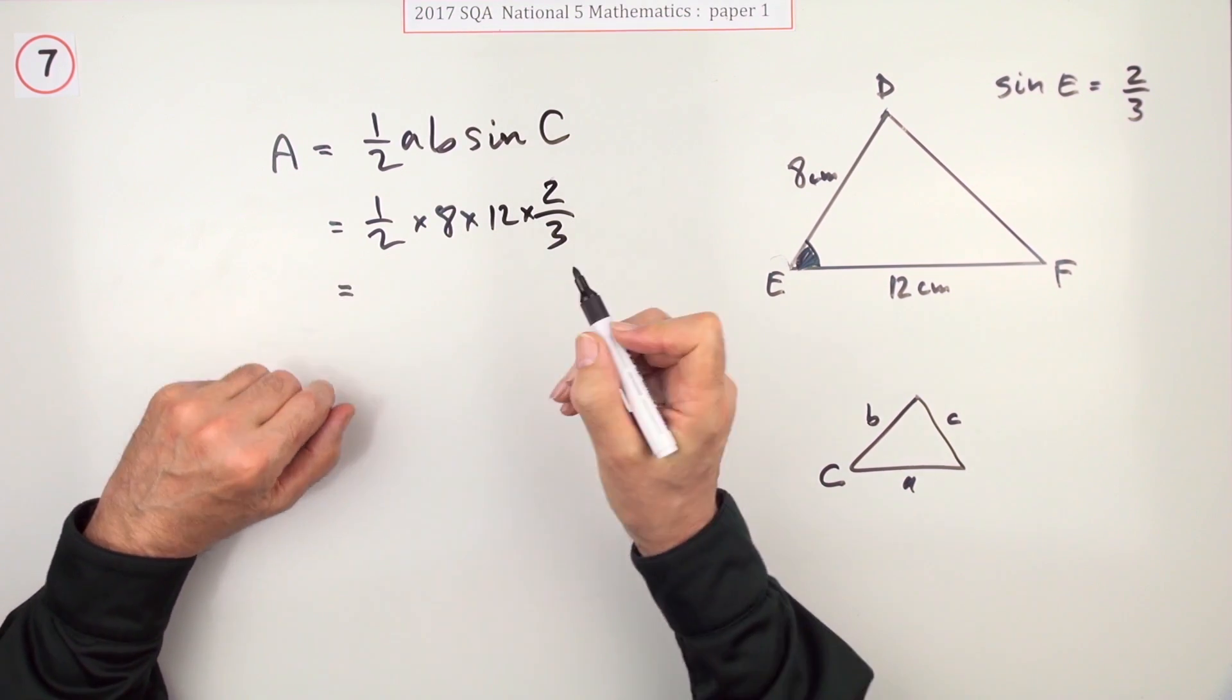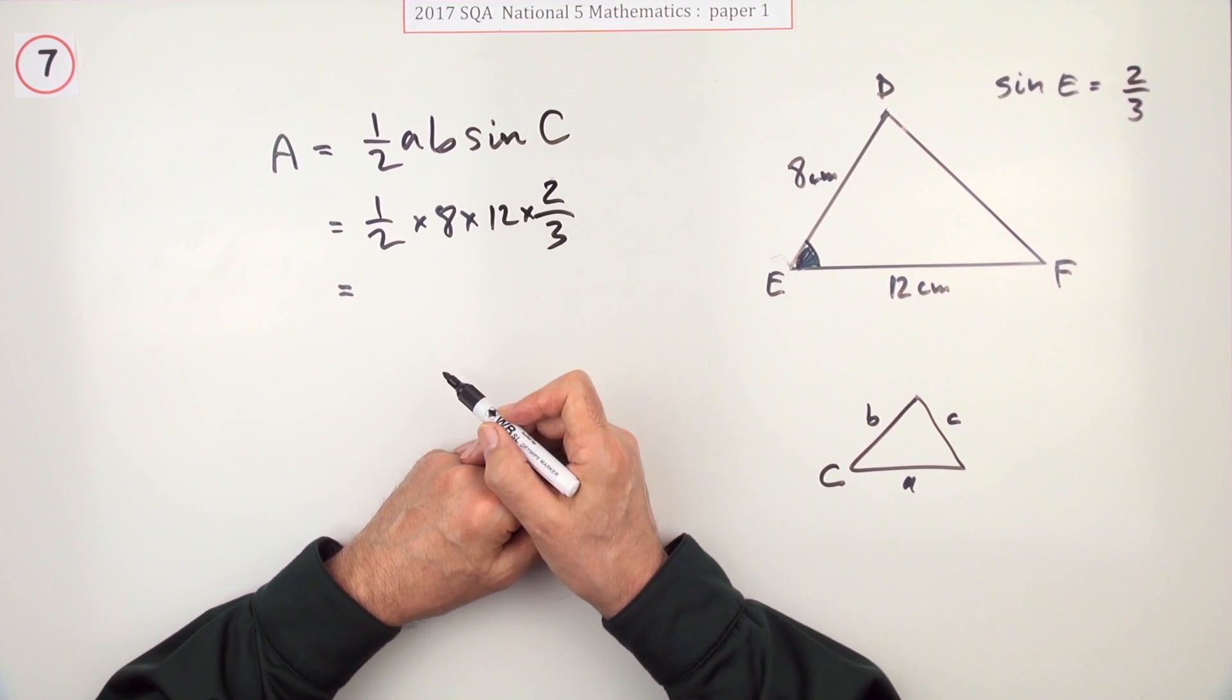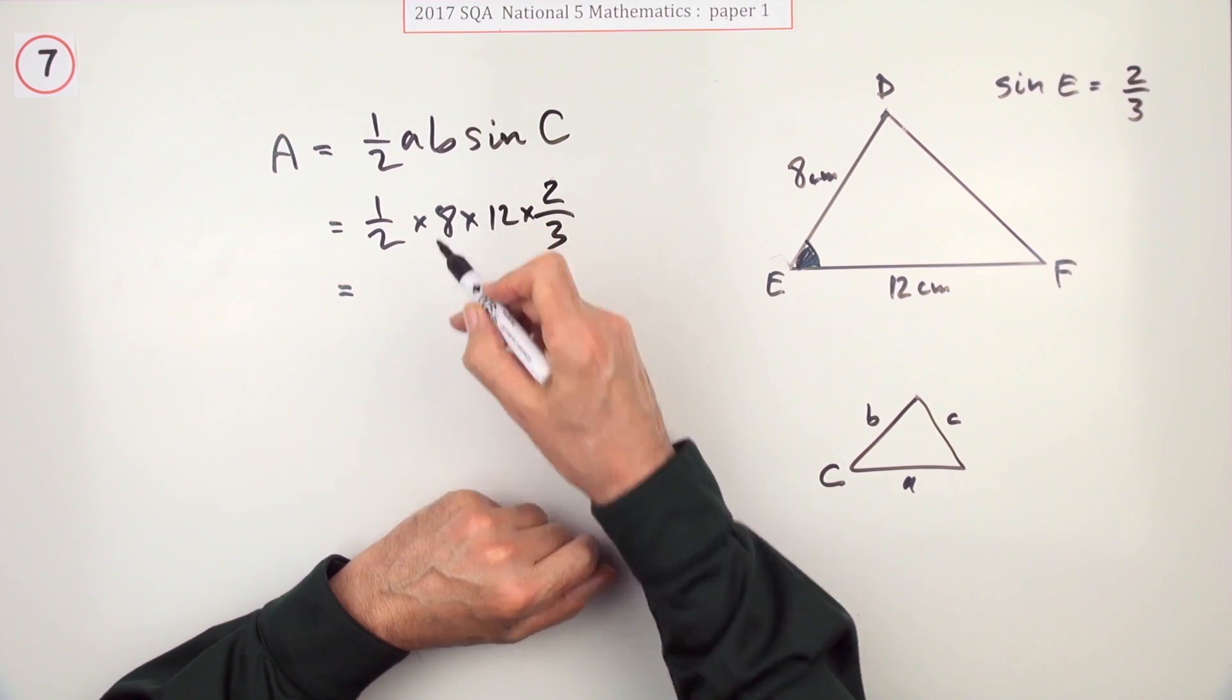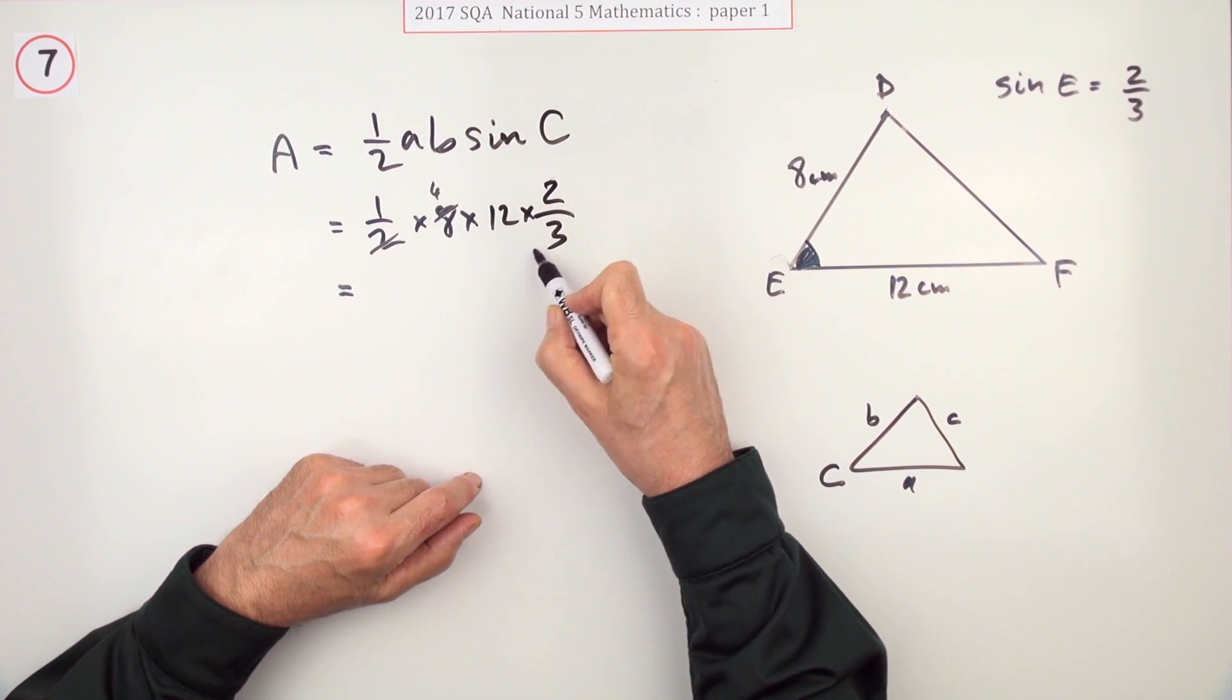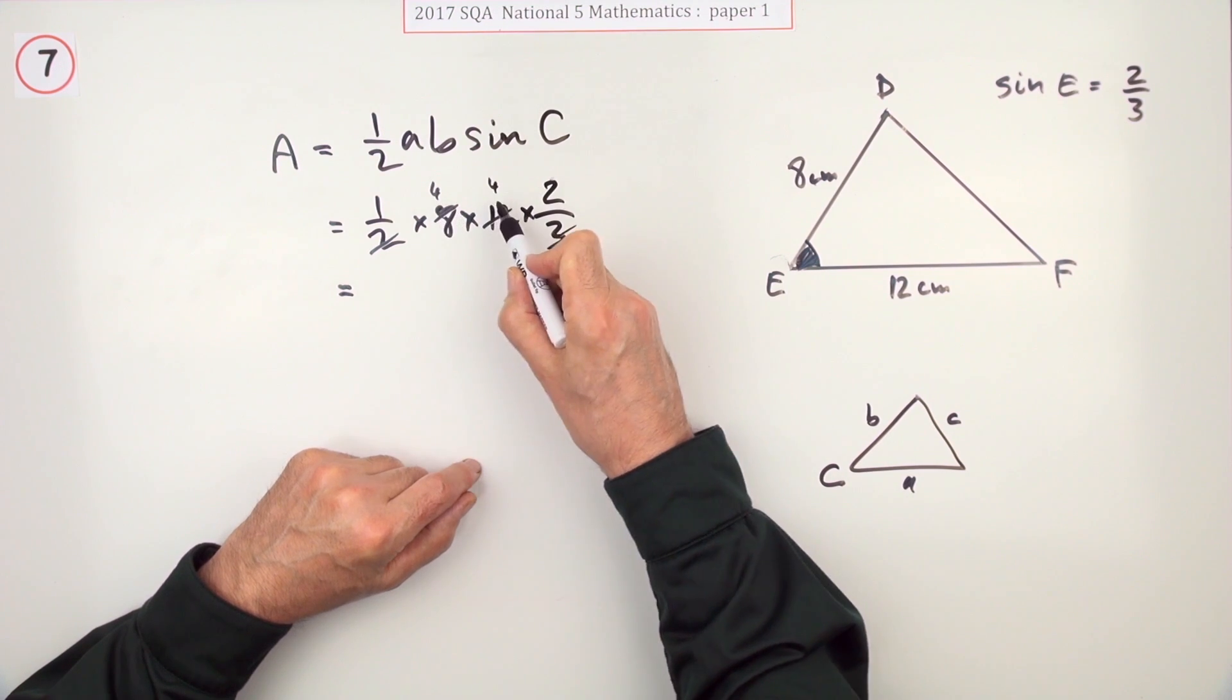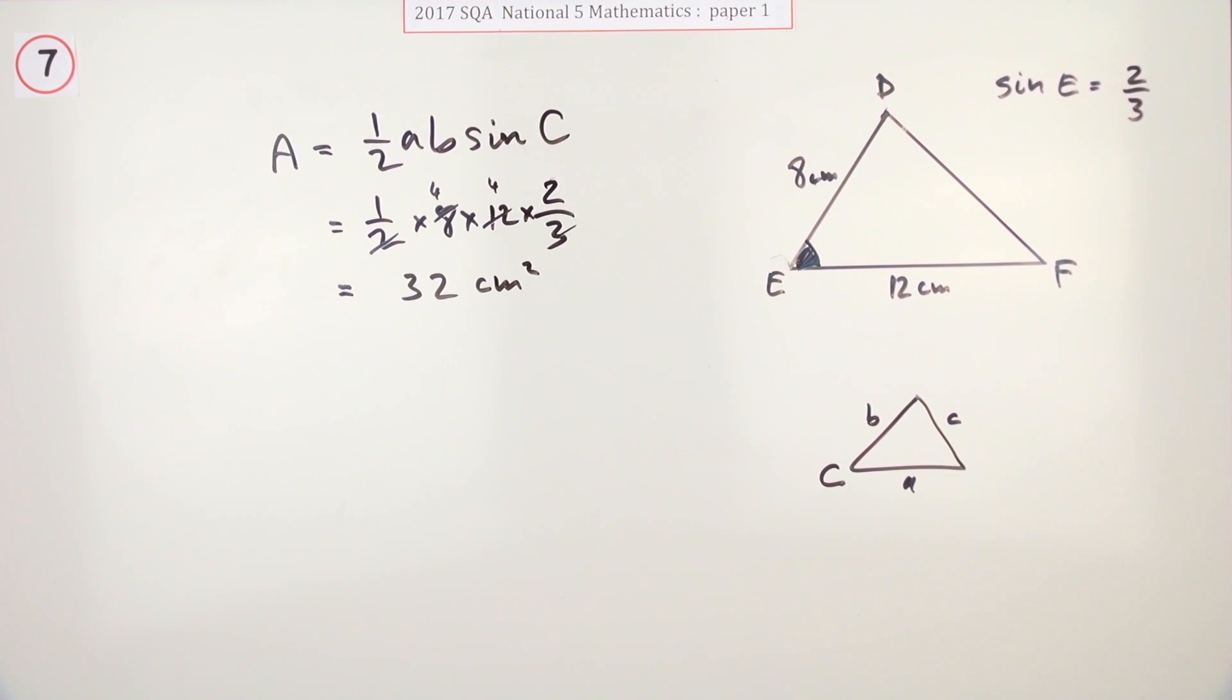Now it's just a case of lots of multiplying and dividing. But you could do some cancelling first. Because the 3 goes into the 12 four times. And the 2 goes into the 8 four times. So that's them gone. The 2 into the 8 goes 4. The 3 into the 12 goes 4. So you're just left with 4 times 4 times 2. 16 times 2. Which is 32 centimeters squared.